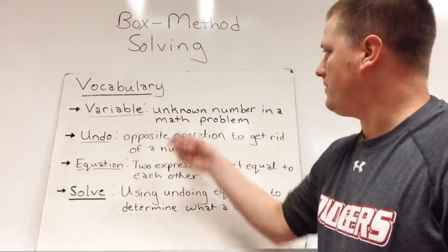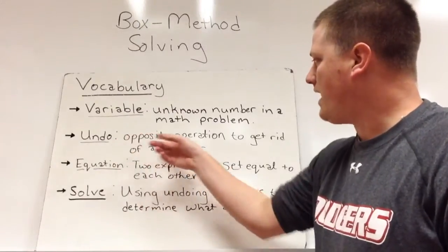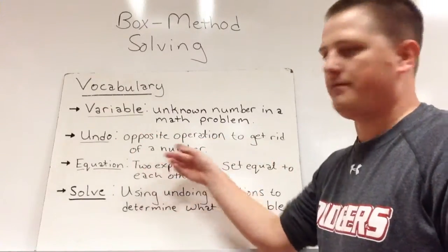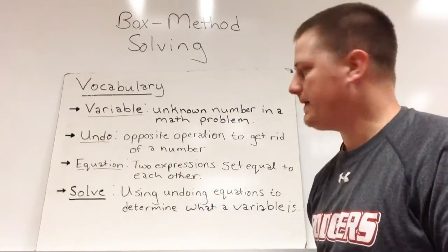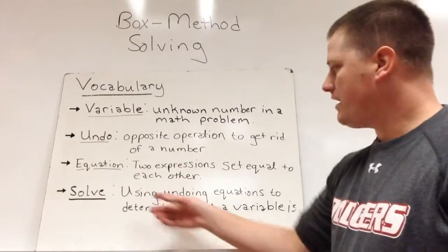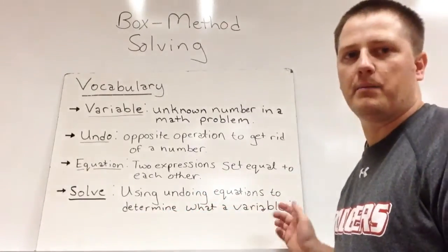Our vocabulary is variable, an unknown number in a math problem. Undo, the opposite operation to get rid of a number. Equation, two expressions that equal to each other. And solve, using undoing equations to determine what a variable is.